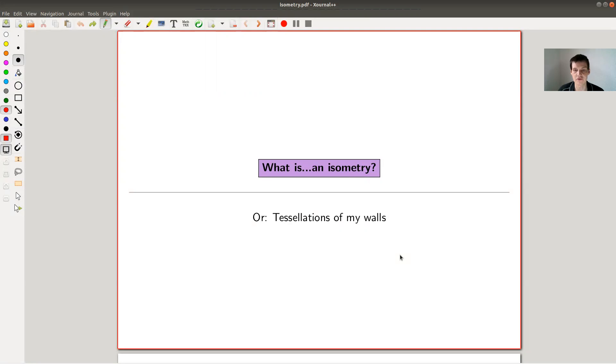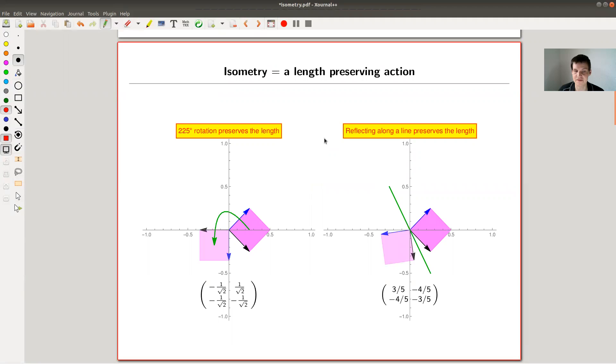Okay, welcome everyone to my continuation of what is linear algebra. Today I would like to talk about a very important concept in classical geometry, the concept of an isometry. Why is it important in classical geometry? Well, we will see that it preserves lengths. And lengths is something classical geometry really likes. It's also important in other parts of mathematics, but it kind of originates in classical geometry.